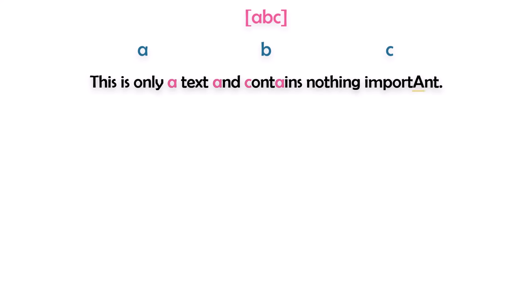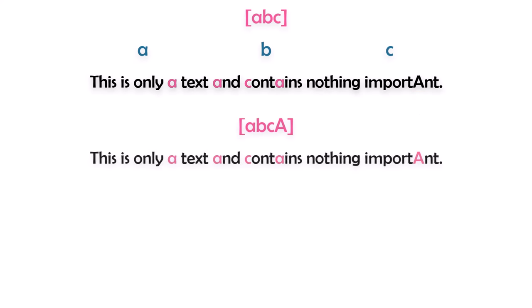For example, the text contains the character A in uppercase, but because the pattern is case sensitive I will not get it as a result. To get it also, I have to change the pattern to include both cases. In this way I will get all matches for these letters — A in lower or uppercase, B, and C. To find only the letter G in the text I can use a specific pattern, and the same for the @ character, and so on.